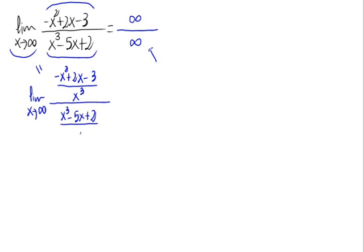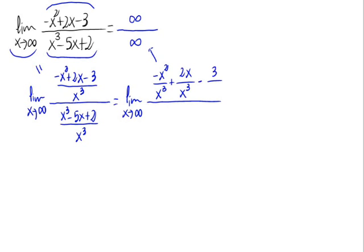Here we have it. This would be equal to the limit when x approaches infinity. Let's divide every monomial by x cubed: that is minus x squared divided by x cubed, plus 2x divided by x cubed, minus 3 divided by x cubed. And the denominator would be x cubed divided by x cubed, minus 5x divided by x cubed, plus 2 divided by x cubed.